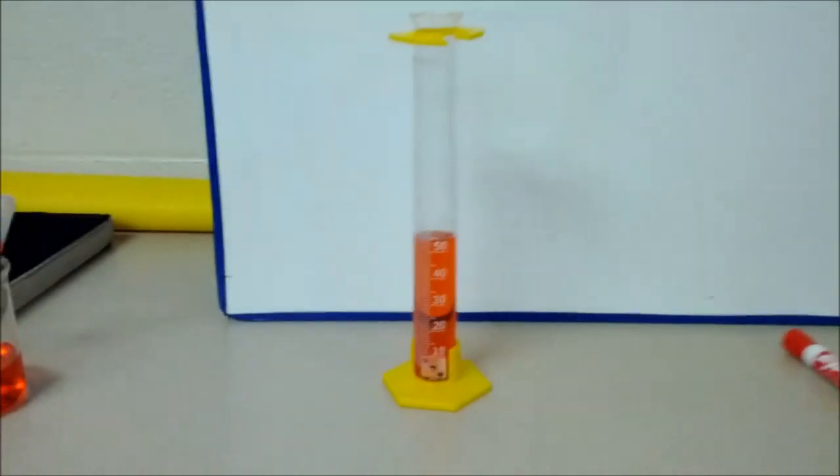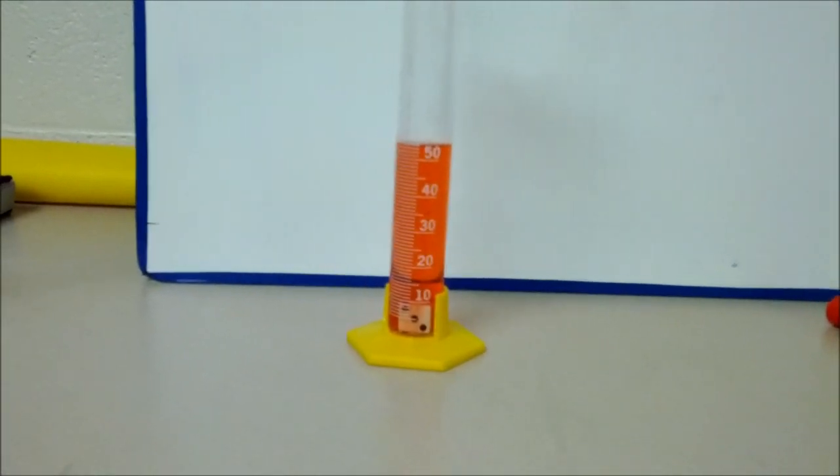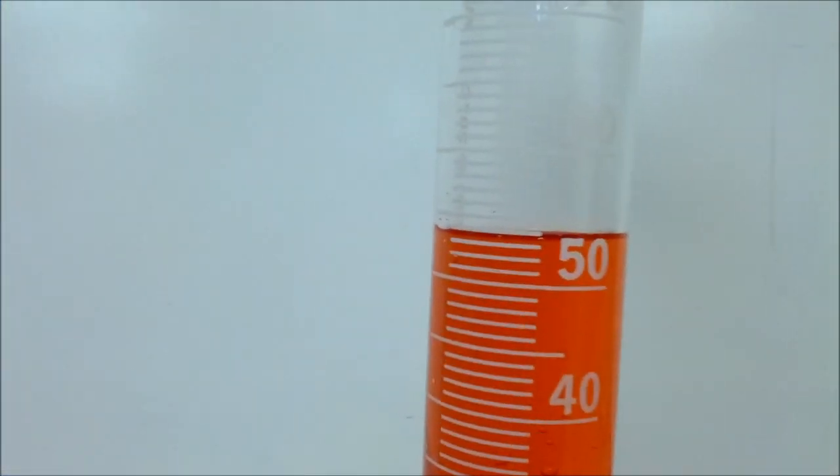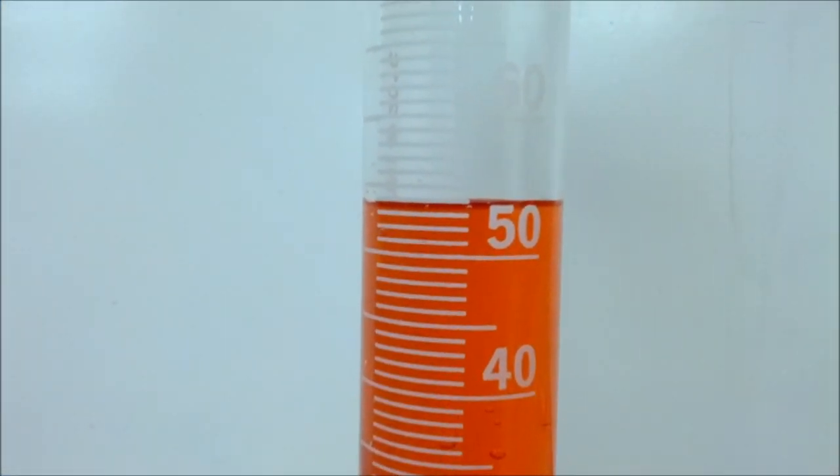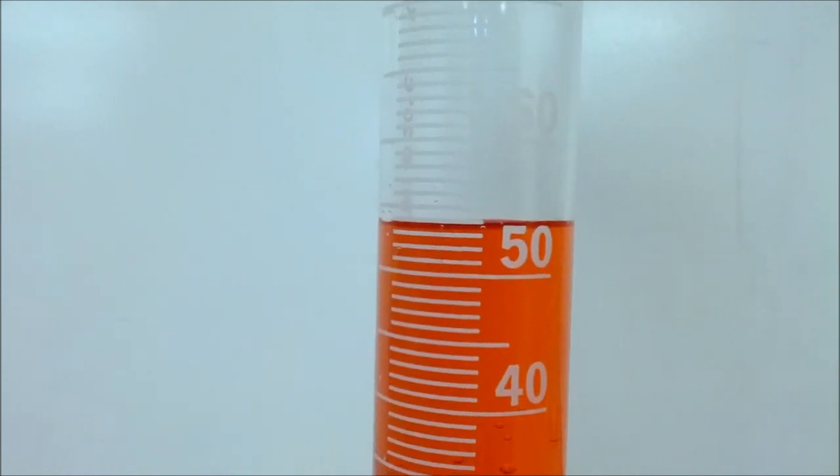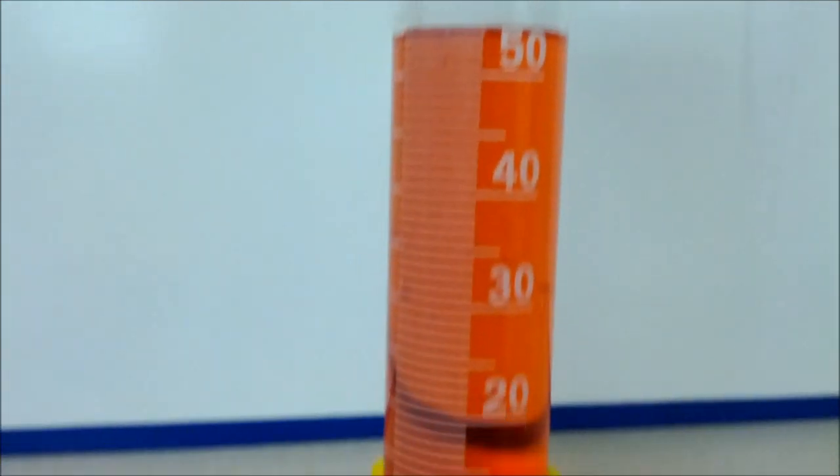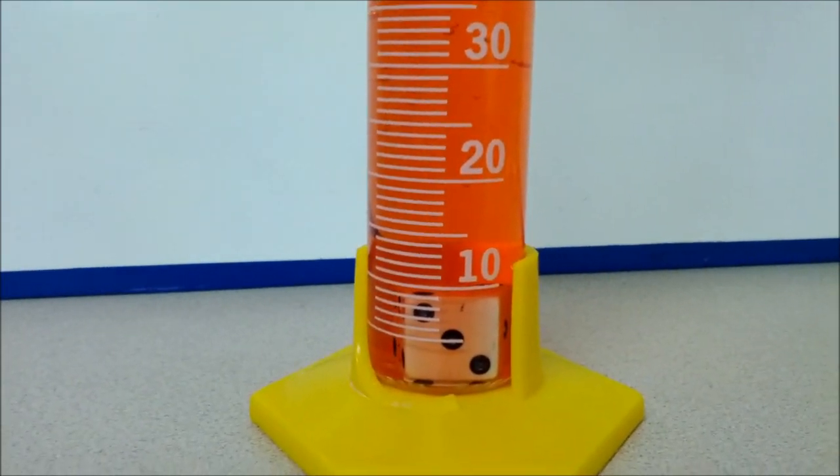Okay, so it was at 50. Now we've dropped in our number cube and we have to come over here and take a reading on our volume. It looks to me like the bottom of the meniscus is right at 53 milliliters.